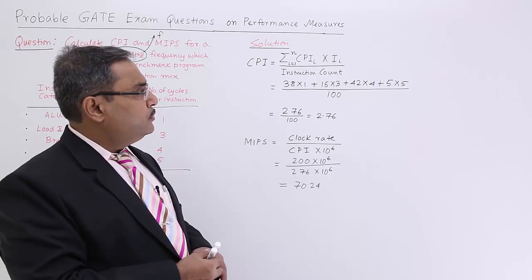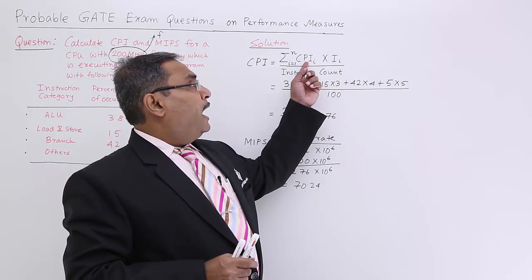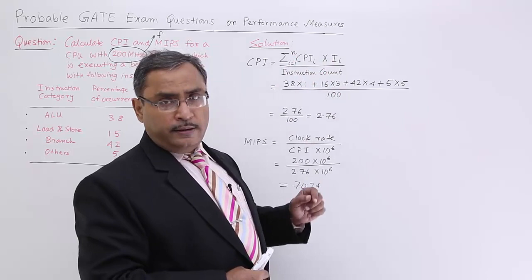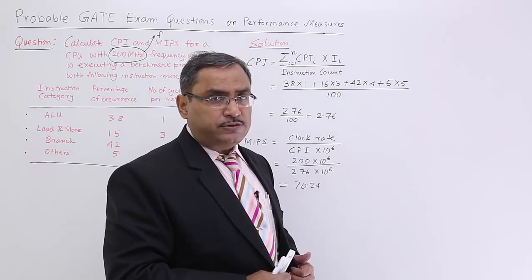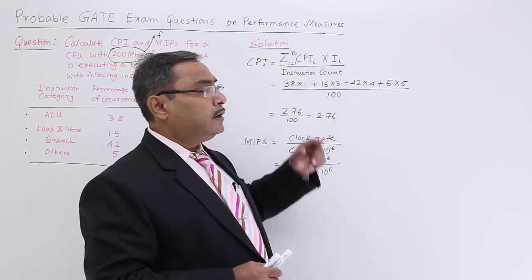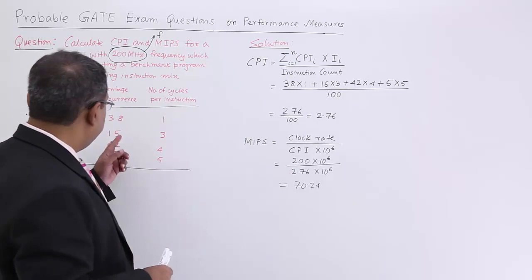At first I am going to calculate the CPI. In that video, we have discussed that the CPI will have the formula like this. That means, per instruction CPI into the instruction count, and that has to be summed for i equals 1 to n. That is the total cycle count you are getting for differing kinds of instructions. And then it has to be divided by instruction count, because cycles per instruction. The instruction count will be coming in the denominator, and that is the equation for the CPI calculation here.